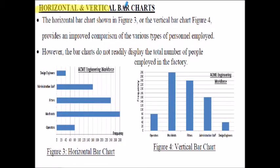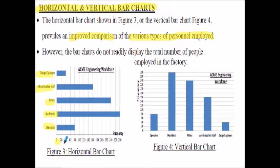Horizontal and vertical bar charts allow us to provide an improved comparison between the various types of category or people employed in this case. On the vertical bar chart we have the categories on the horizontal axis and we have the frequency on the vertical. Both are used for comparative purposes.